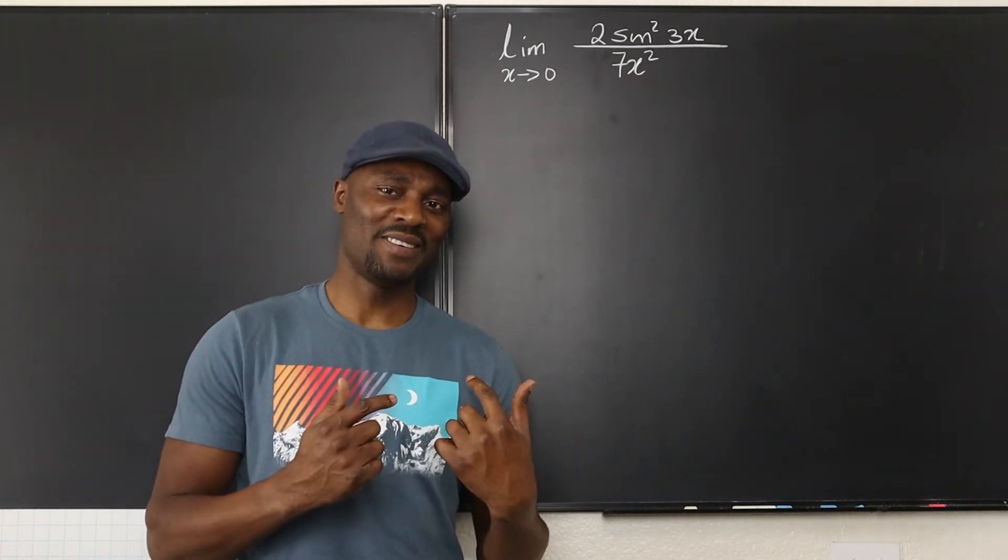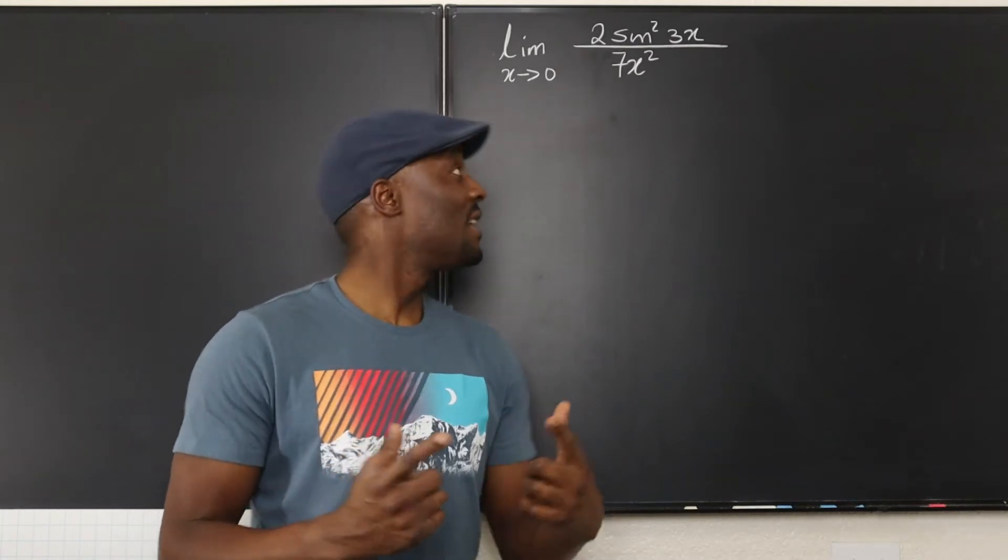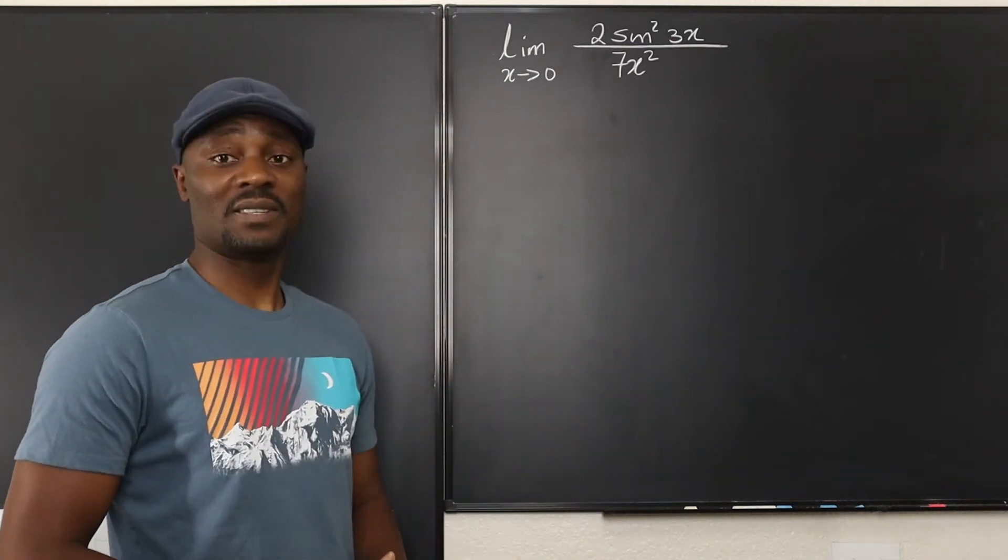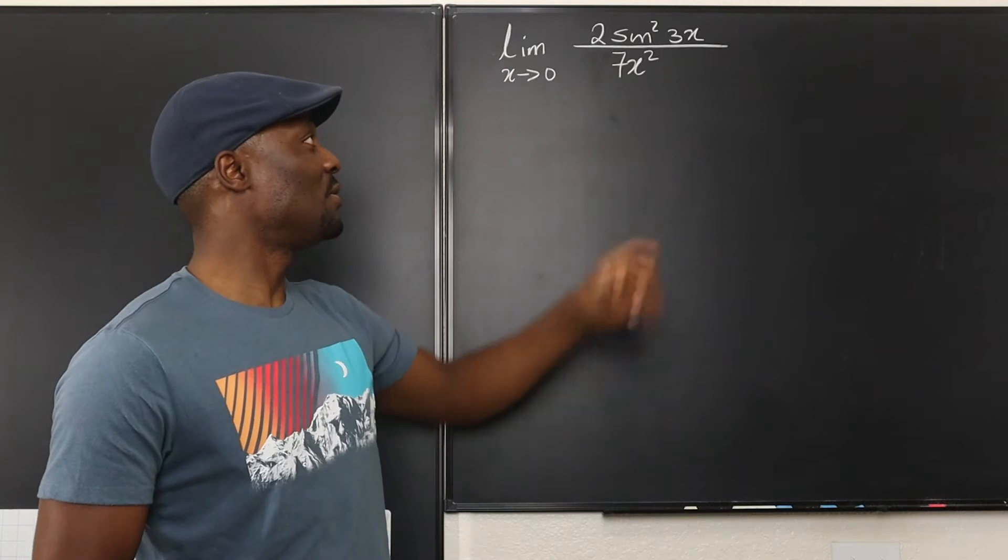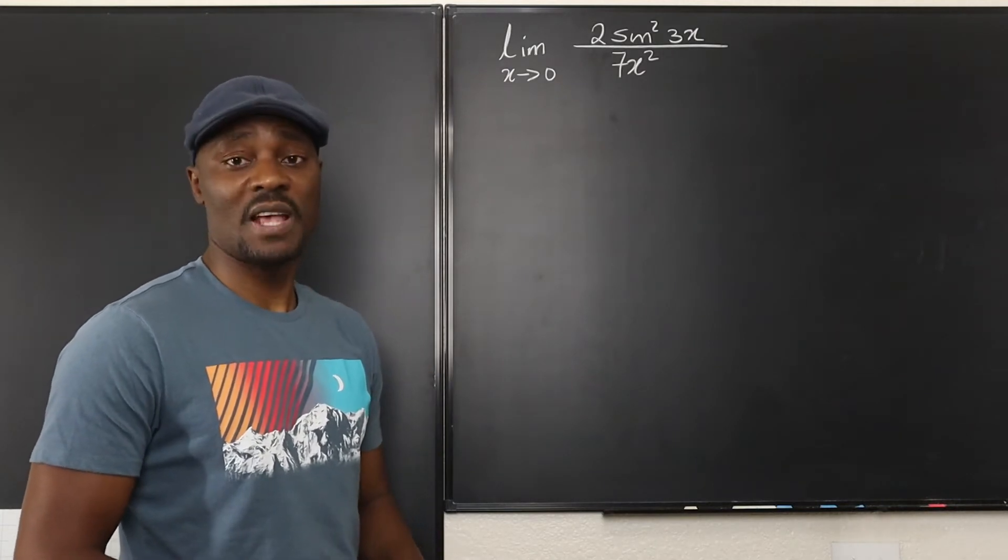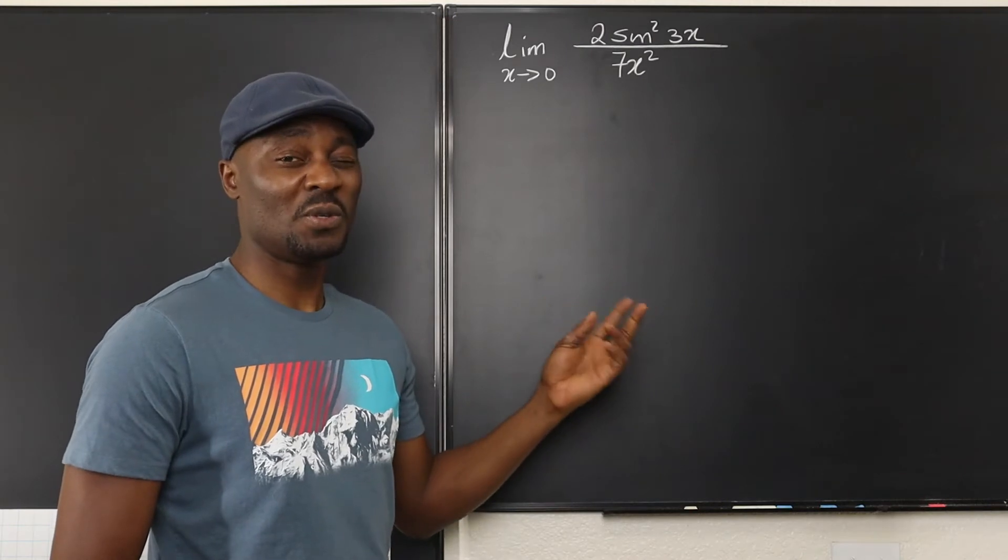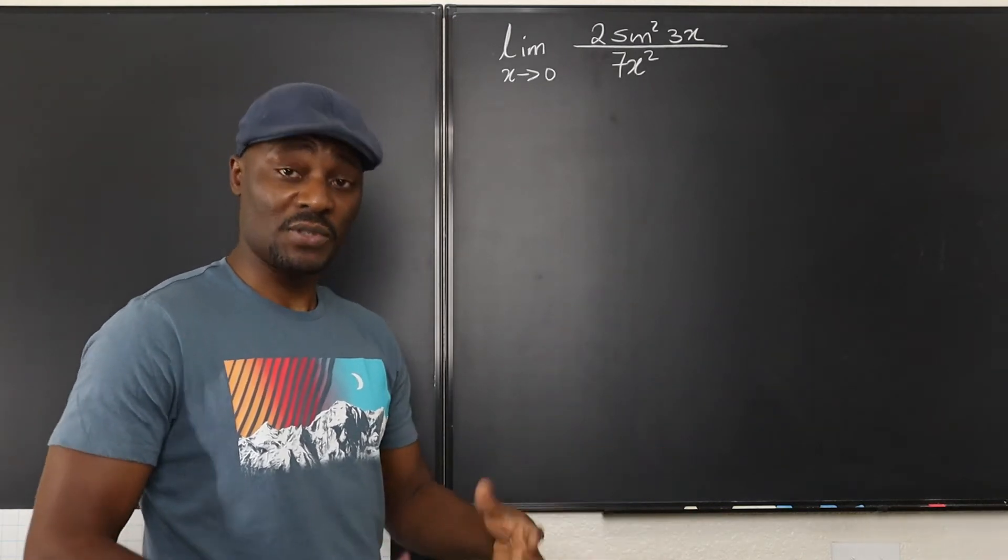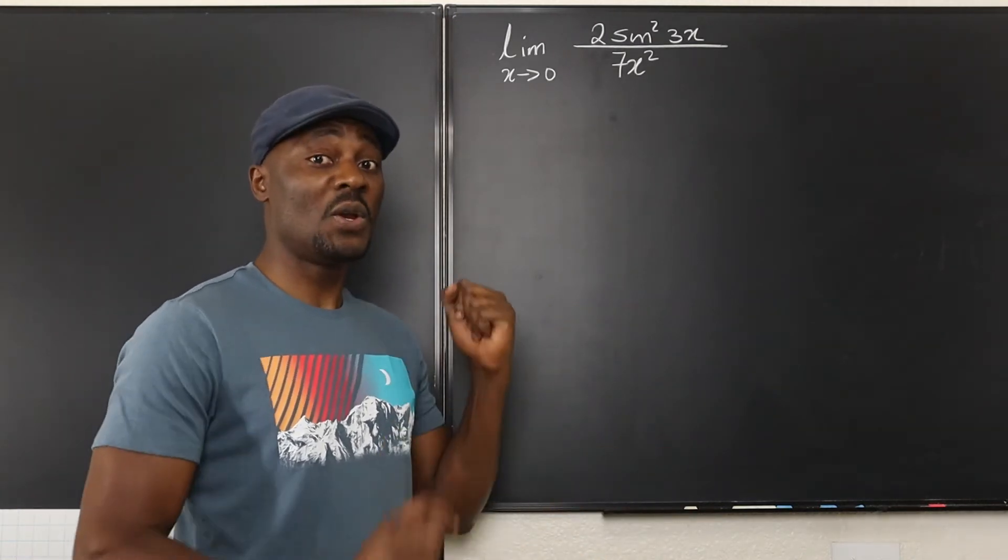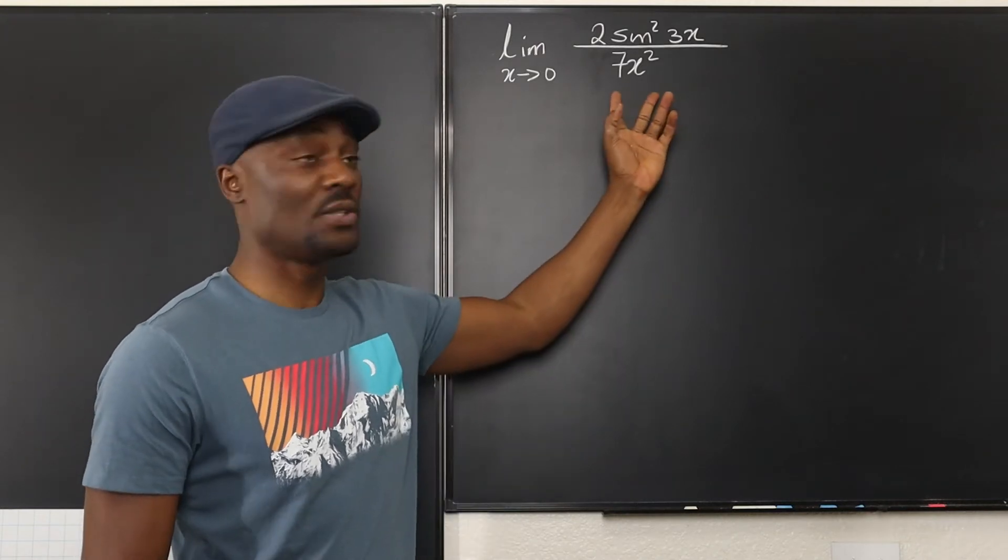Hello, welcome to another video. So this one is just taking limits as x approaches 0 of 2 sin squared 3x over 7x squared. Now this is supposed to be a 2 or 3 line problem. For some people it might be a very long problem because they just don't know what to do with this.